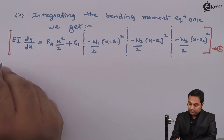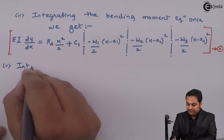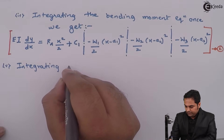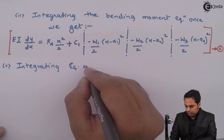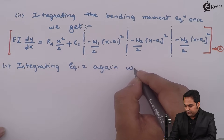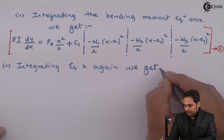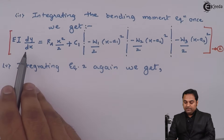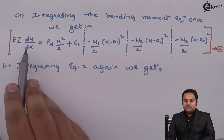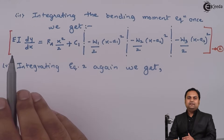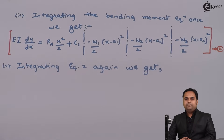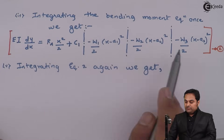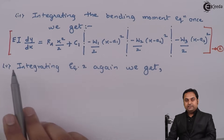In Macaulay's method, once we get dy/dx, this dy/dx represents slope — that is the angle by which the beam has been bent. So once we get the dy/dx equation we will be getting the slope equation.